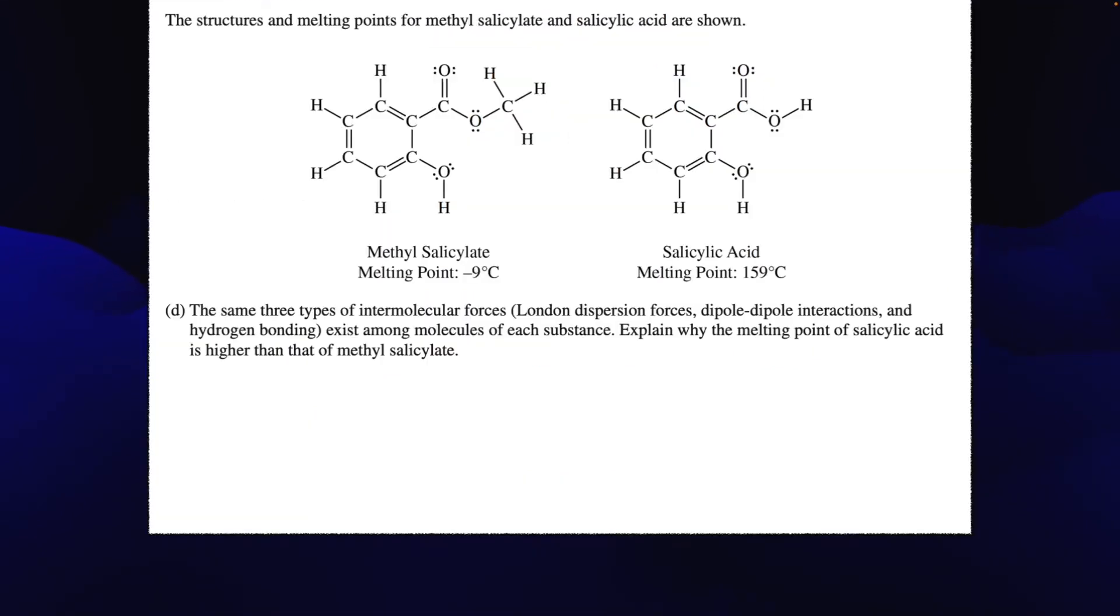All right, what about letter D? We have these two structures. So it says the structures and melting points for methyl salicylate and salicylic acid are shown below. The same three types of intermolecular forces, London dispersion, dipole-dipole, hydrogen bonding, exist among molecules of each substance. Explain why the melting point is so different. Like if we take a look here, negative 9 degrees Celsius compared to 159 degrees Celsius, there has to be structurally, even though they look very similar, there's some difference here. And so what I really am interested in is why. Why are these melting points so different? Well, if you know anything about our functional groups, right here we have an ester, here we have a carboxylic acid, here we have an alcohol, here we have an alcohol. So what do I notice? Well, I notice that there's basically going to be a single alcohol group here, and remember, for hydrogen bonding, right, what you really need is some OH groups. You need some alcohol groups that would really help.